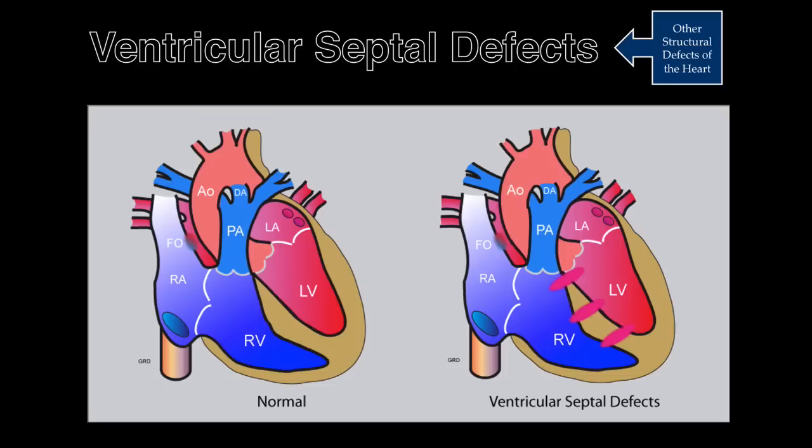Ventricular septal defects can occur in any part of the interventricular septum and are often associated with other cardiac abnormalities. There are several classifications used for identifying the location of ventricular septal defects. In this presentation, ventricular septal defects are classified as inlet, membranous, and muscular.